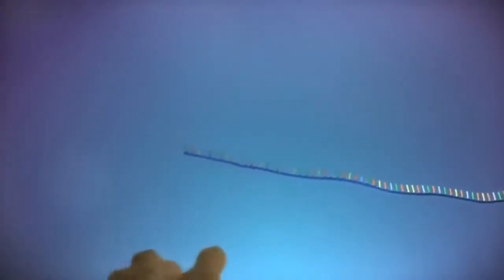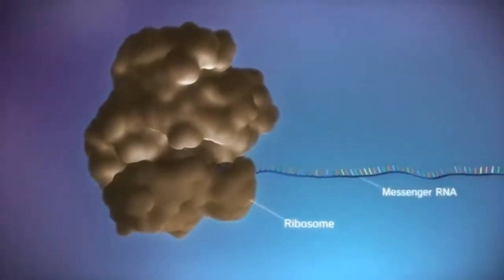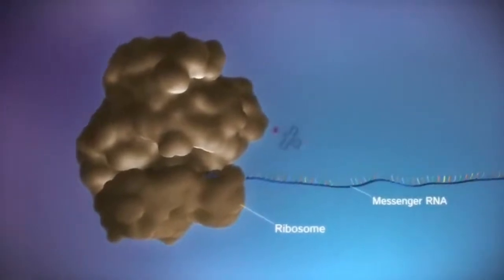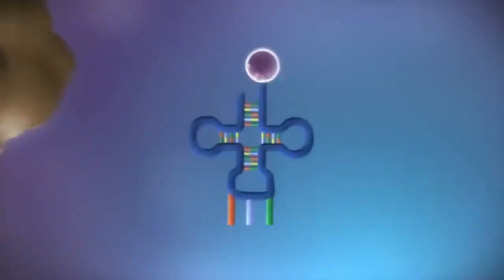Protein factories in the cytoplasm, called ribosomes, bind to the messenger RNA. The ribosome reads the code in the messenger RNA to produce a chain made up of amino acids.